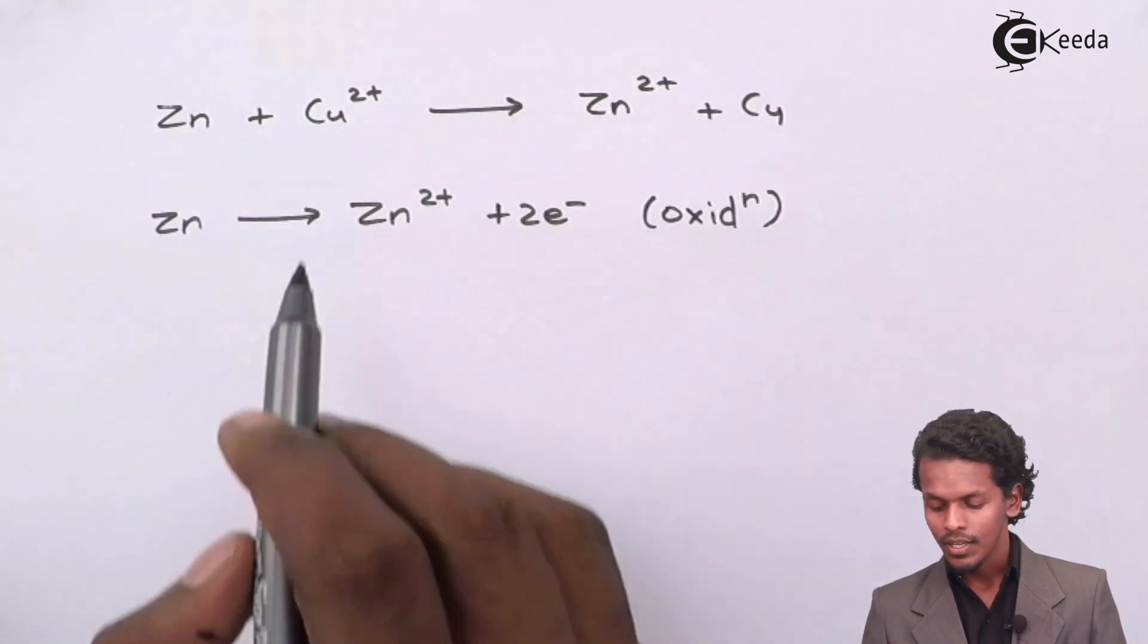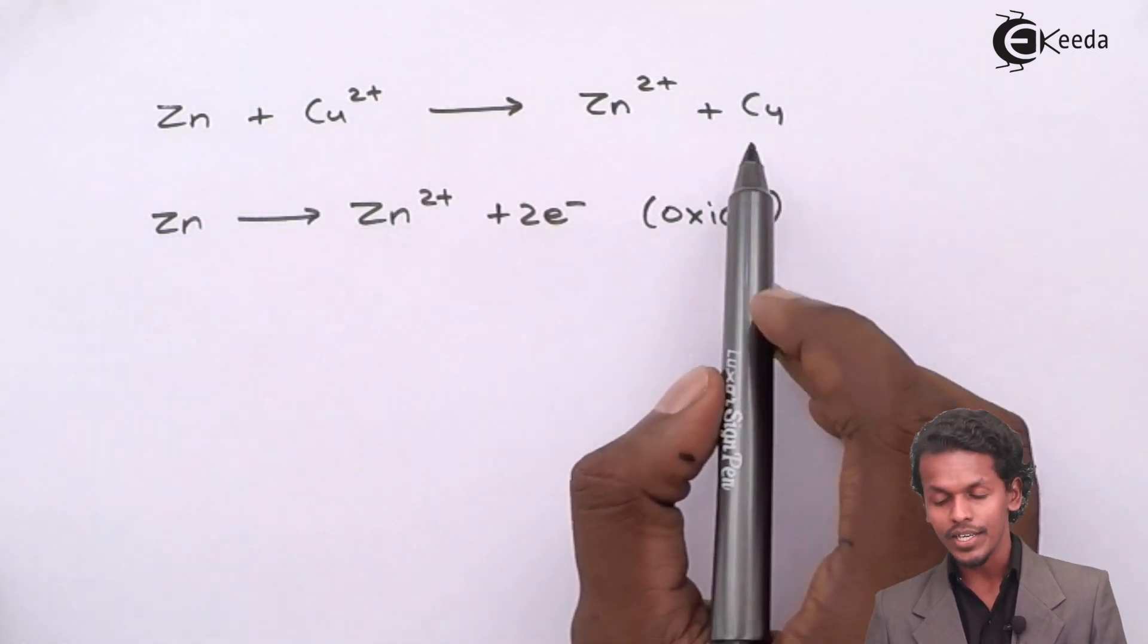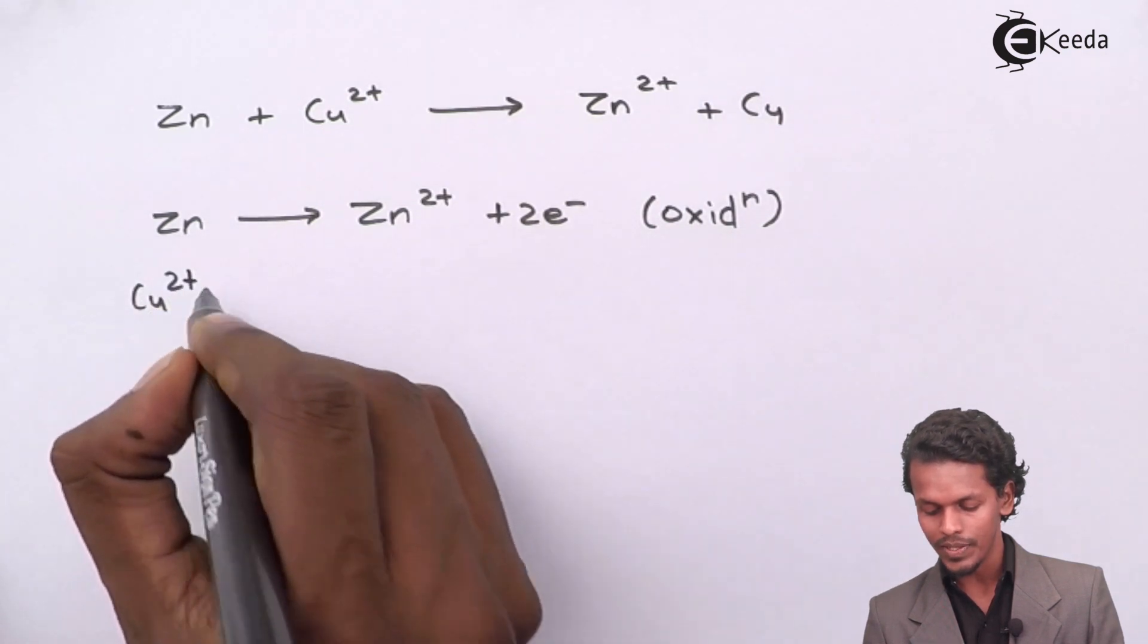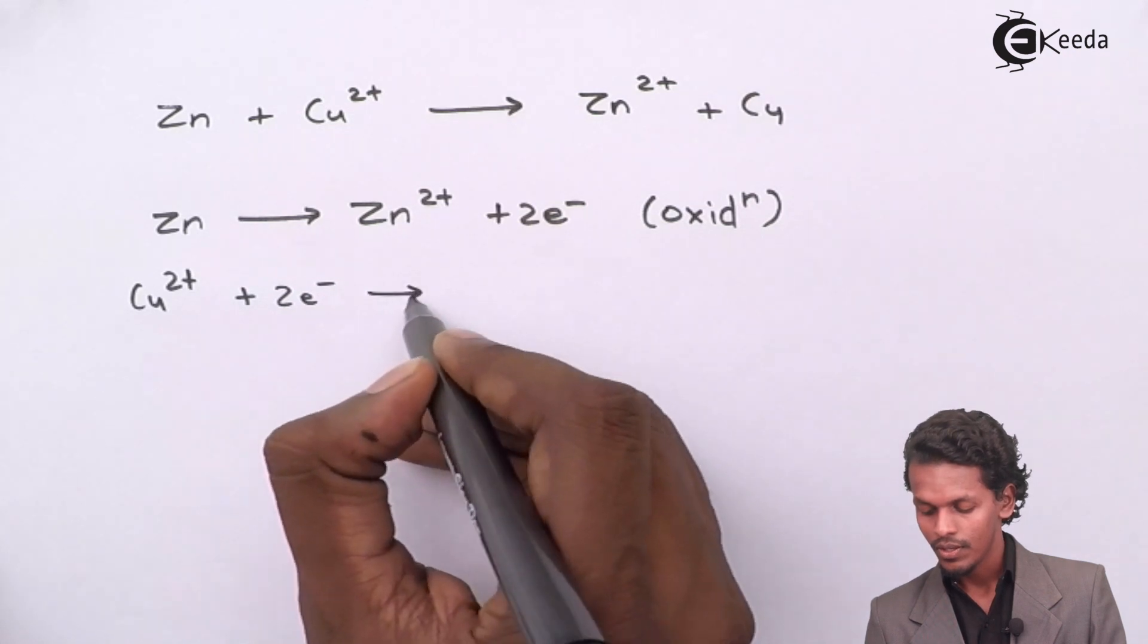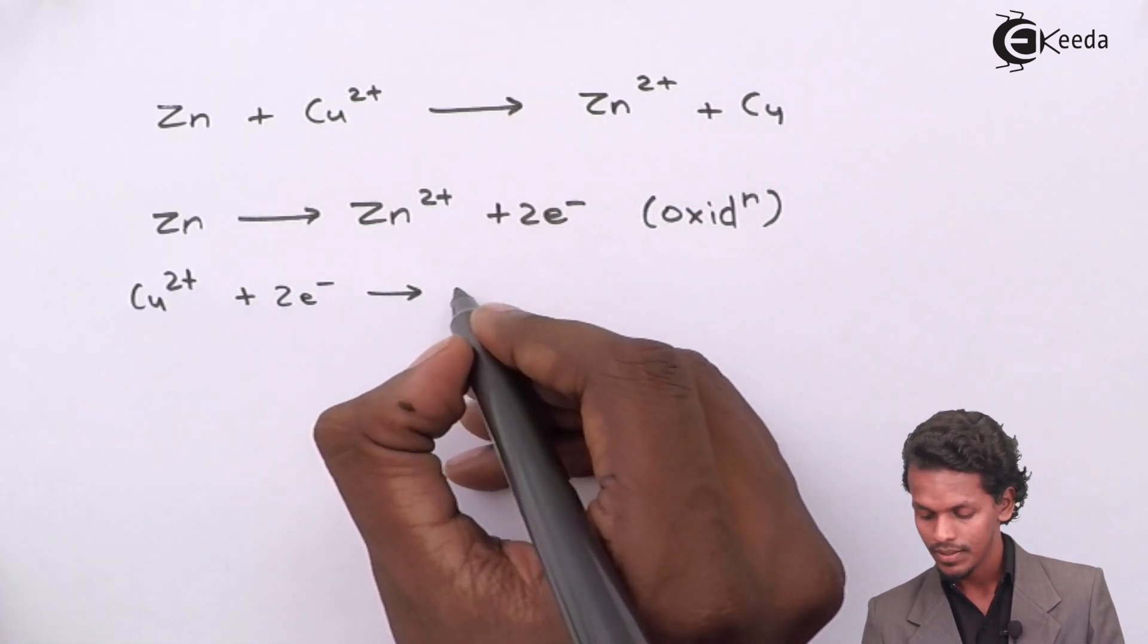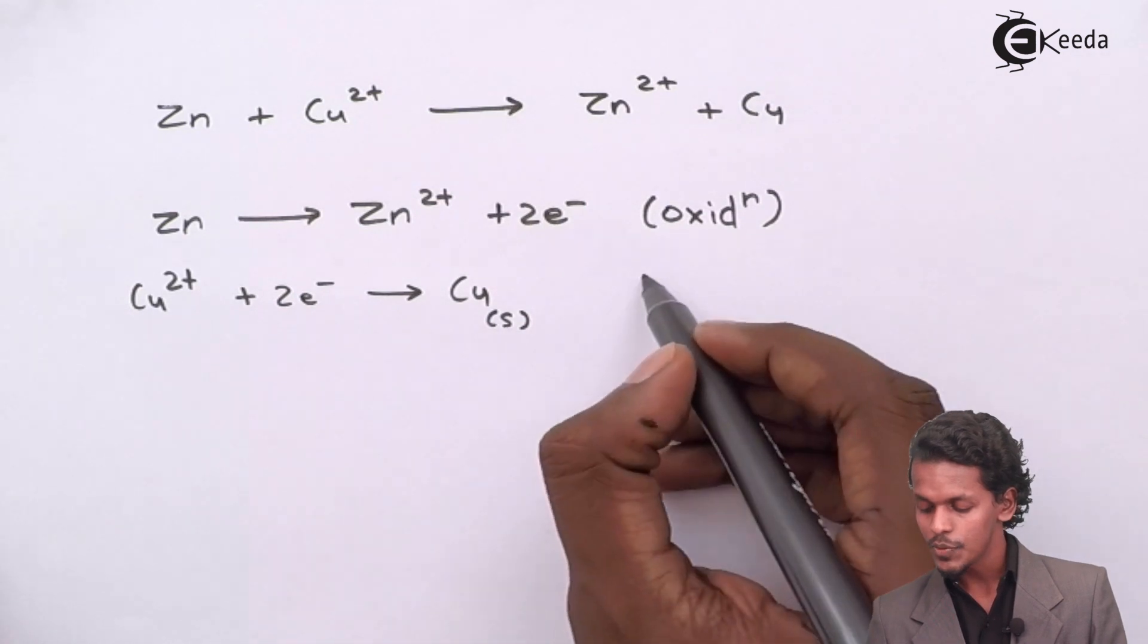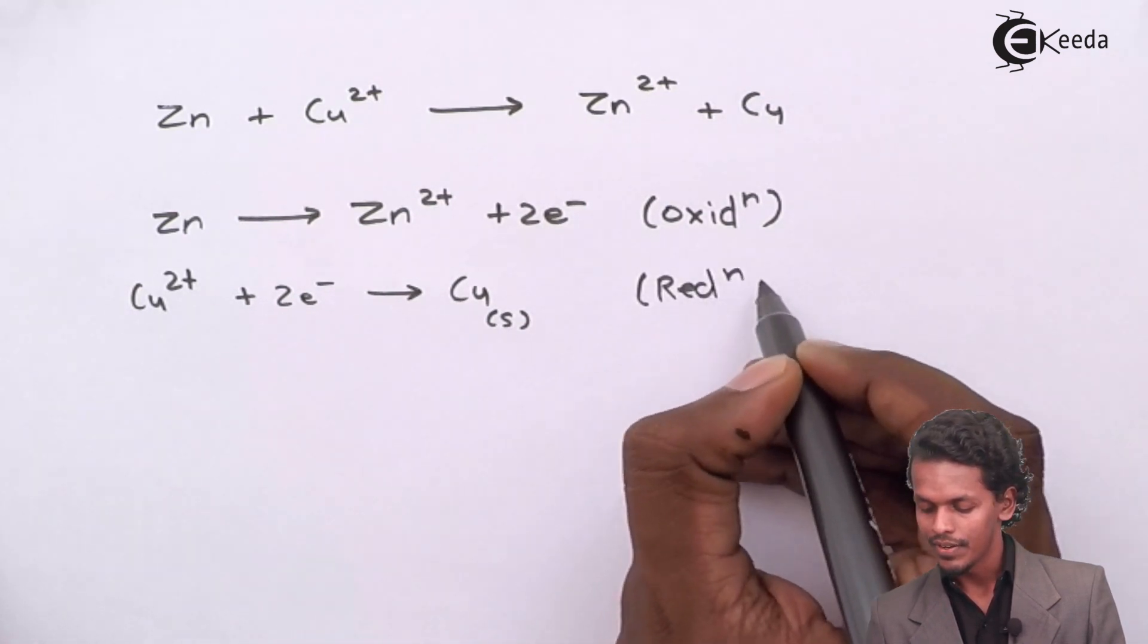Meanwhile, copper 2+ is converted into Cu. Therefore, Cu2+ will accept these two electrons to give us copper in solid form. This process is known as reduction.